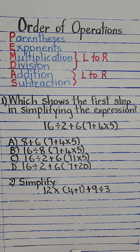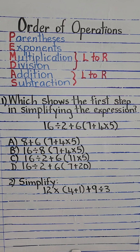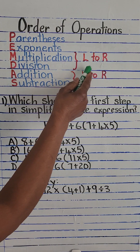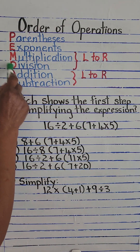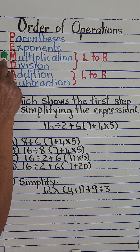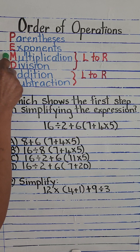Welcome to fifth grade math standards of learning. Today we're looking at the order of operations. The order of operations is parentheses, exponents, multiplication, division, addition, subtraction. Multiplication and division we perform from left to right — whichever one comes first. If multiplication is first, we do that; if division is first, we do that.